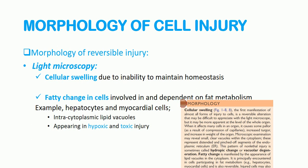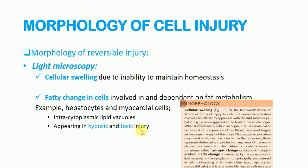Let's start with the morphology of reversible cell injury. Under the light microscope, reversible cell injury appears as cellular swelling, which is due to the inability to maintain ion balance. You can also see fatty change in the cell. Fatty change is common for those cells involved in and dependent on fatty metabolism, for example the hepatocytes of the liver and myocardial cells. You will see intracytoplasmic lipid vacuoles, as well as the appearance of hypoxic and toxic injury.